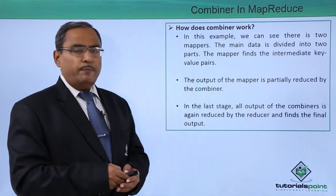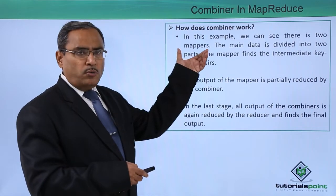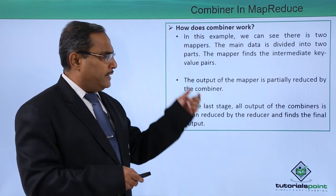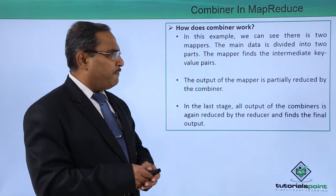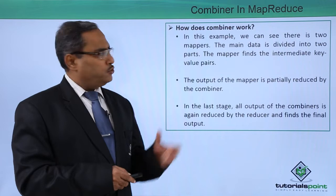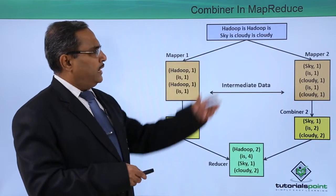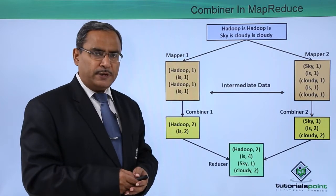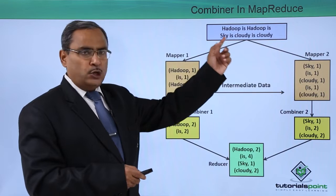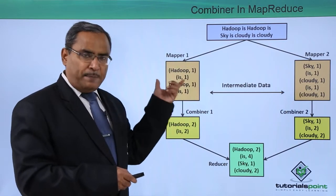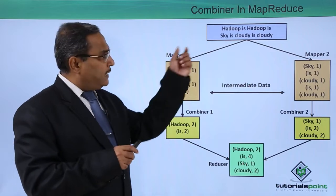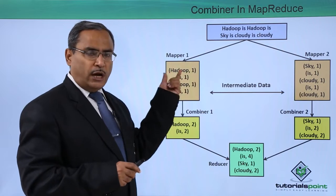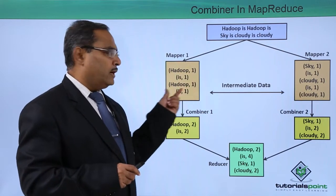How does combiner work? In this example, there are two mappers and the main data is divided into two parts, and the mapper finds the intermediate key-value pairs. Here the data has been divided to two different mappers. The first line is 'Hadoop is Hadoop is,' available to mapper 1, and the mapper has made key-value pairs where the key is each word and the value is 1. So that gives us: Hadoop,1 — is,1 — Hadoop,1 — is,1.